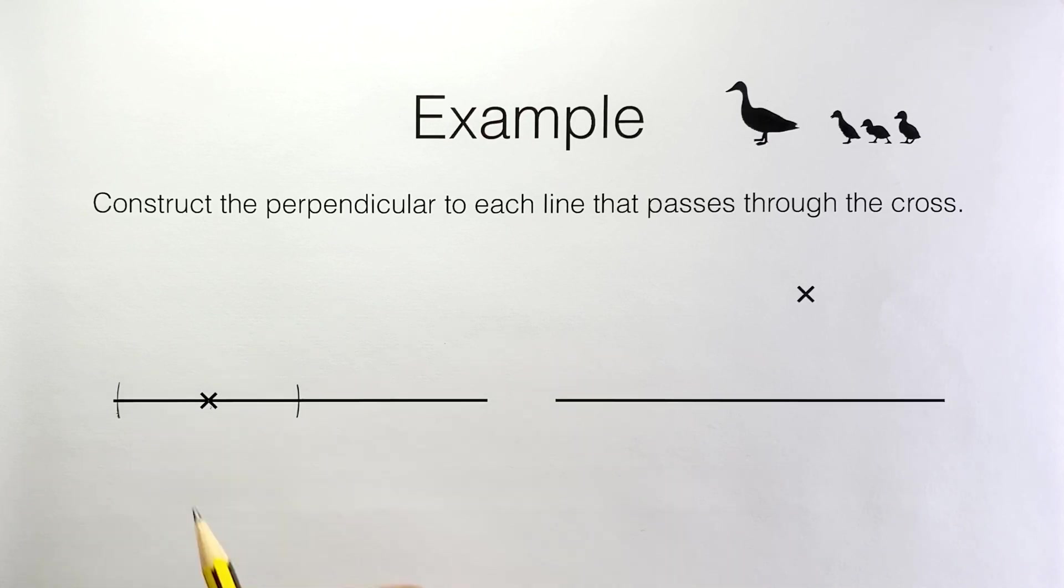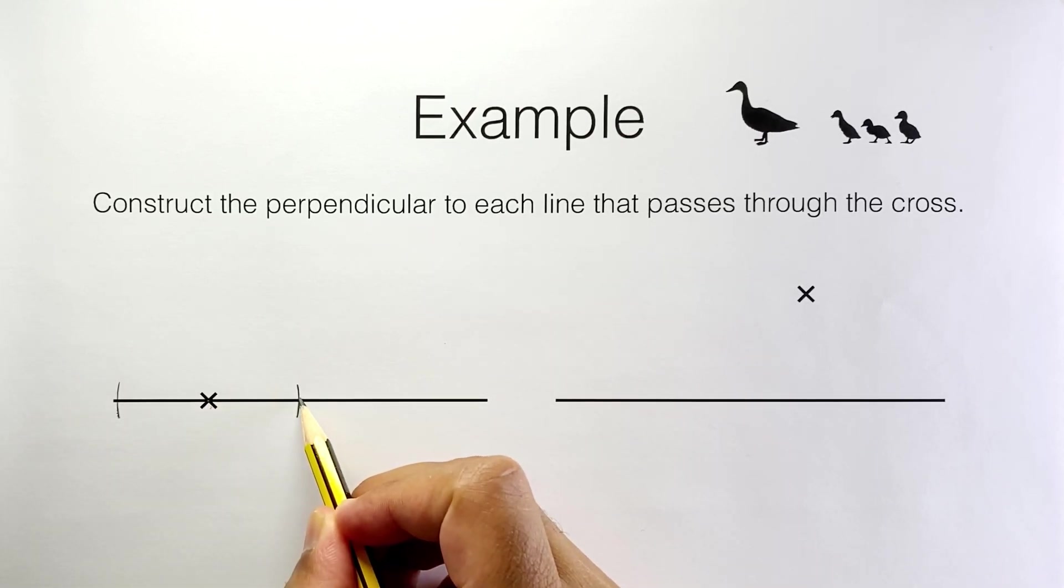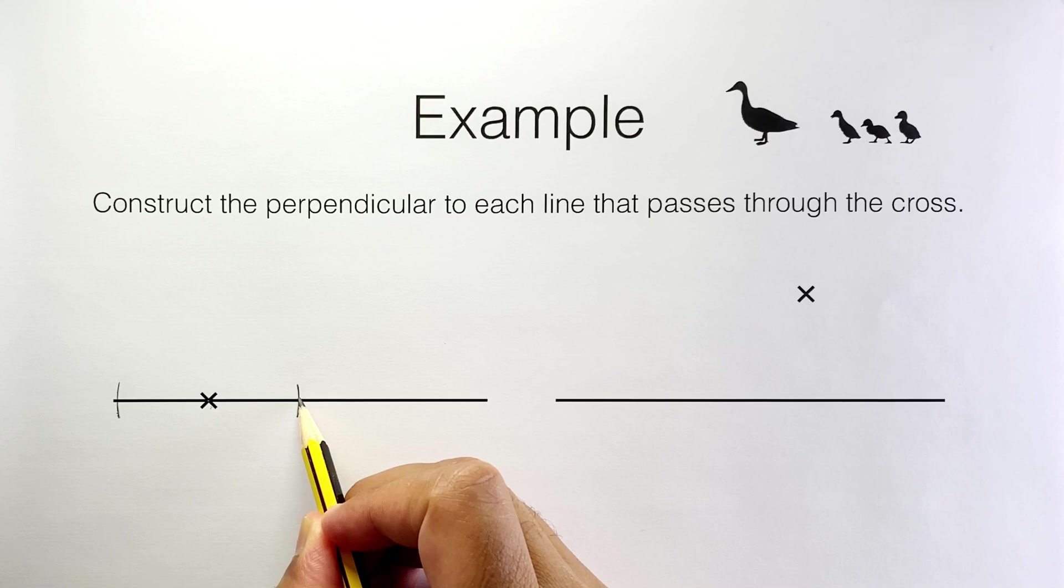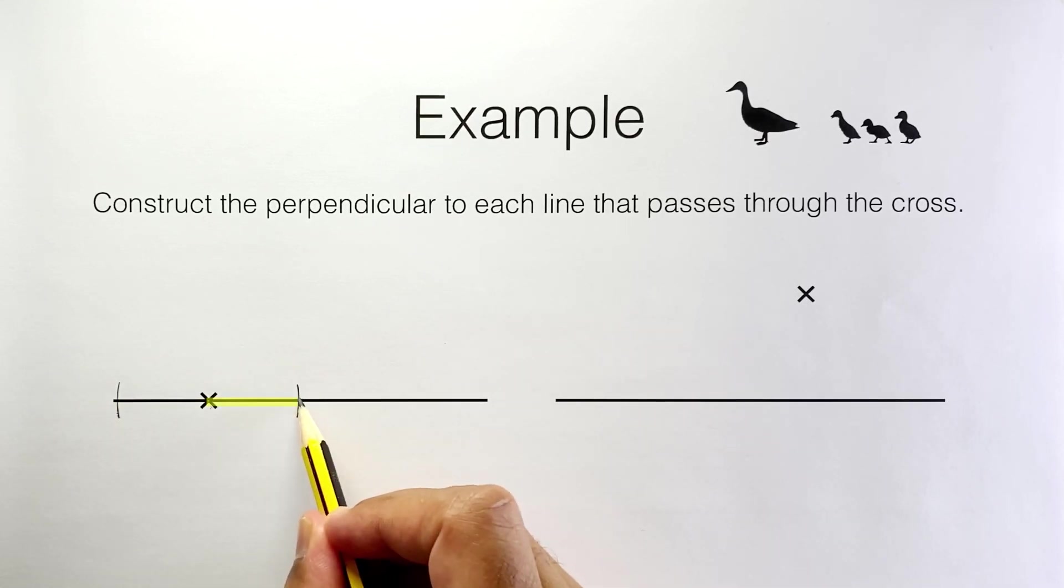Now notice that the distance from that point there to the mark we made is the same as the distance from that point to the other mark we made. So this distance is the same as this distance.